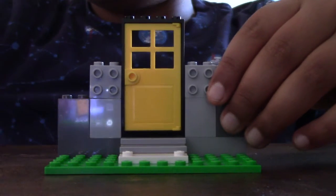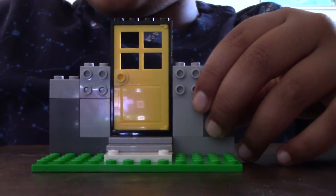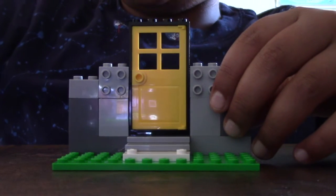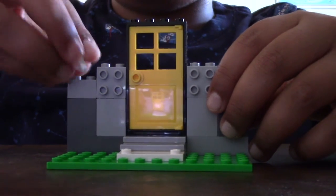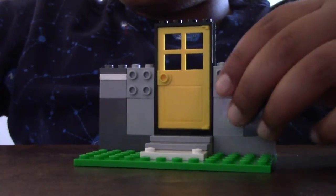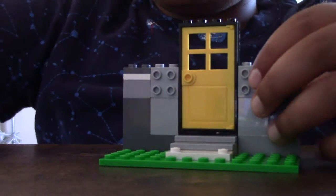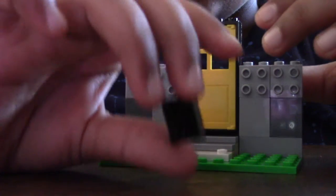Then we can place a 1x2 and some plates. I guess I'm gonna do a white and gray like this.